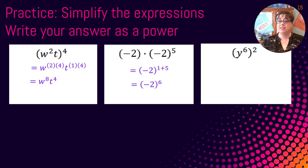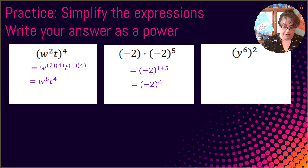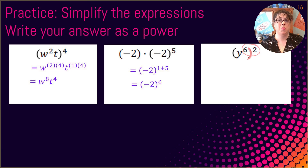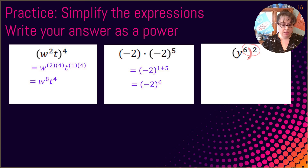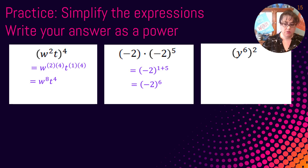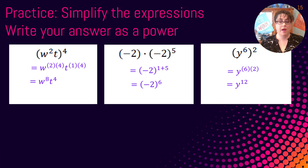On the last one, when you have those two numbers right next to each other, go ahead and circle them — circling them helps you remember those are going to get multiplied. Also remember when two numbers are next to a parenthesis, they multiply. So we have y to the 6 squared, and those are going to multiply, giving you y to the 6 times 2, which is y to the 12th.